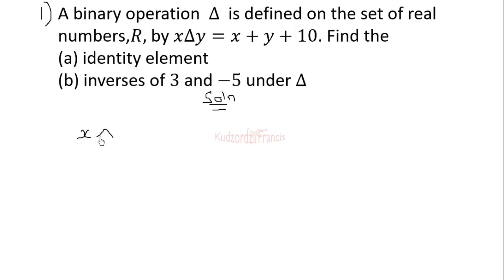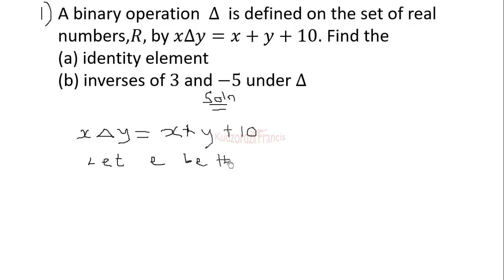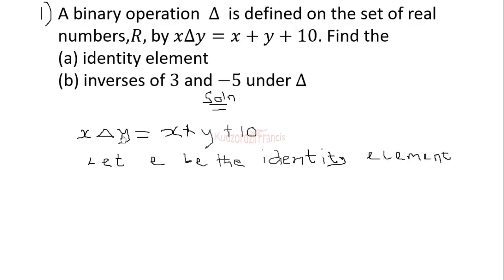We were given the definition as x triangle y equals x plus y plus 10. To find the identity element, let the identity element be e. This identity element, when it operates on any element, should give the element itself. So if e operates on x, it should give us x.